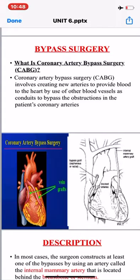Basically, what happens is that if an artery in the heart is affected due to any accumulation of plaque, or due to any accumulation of fibrosis or thrombosis, then the heart won't be able to get a sufficient amount of blood. In that case, we need to bypass the artery so that blood will reach that particular area and supply blood to that part.